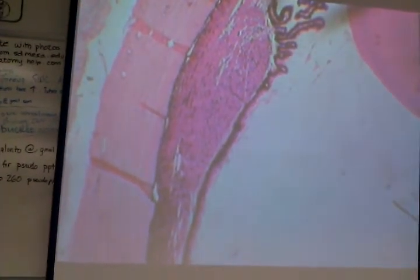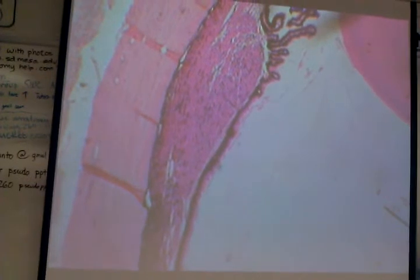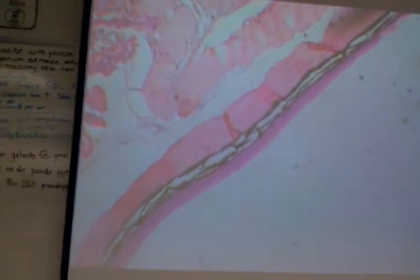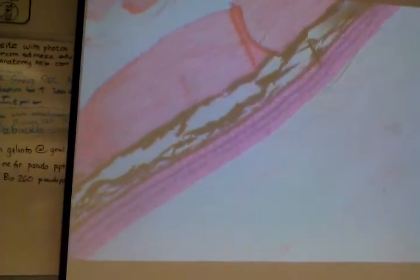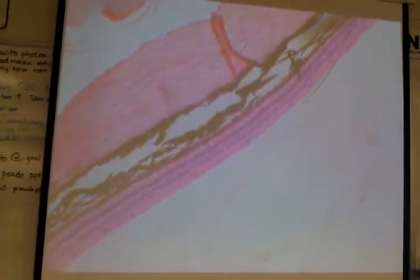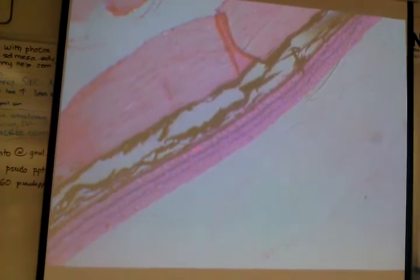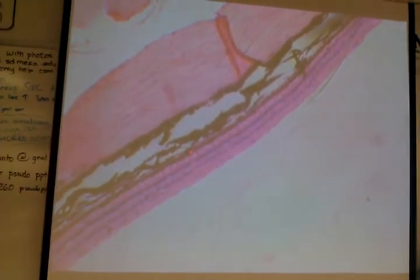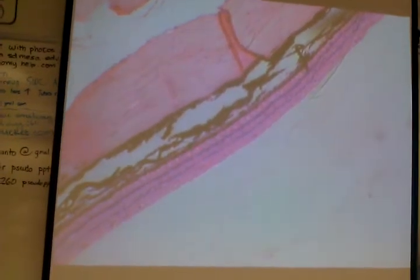But let's look further back in the eye so you can see what it looks like. So if we go back a little further, let's find a nice spot right here. And go to higher magnification. So right here, this layer, from where my pointer is to right here, and we'll look at this in a better picture in a minute, this is the neural layer.